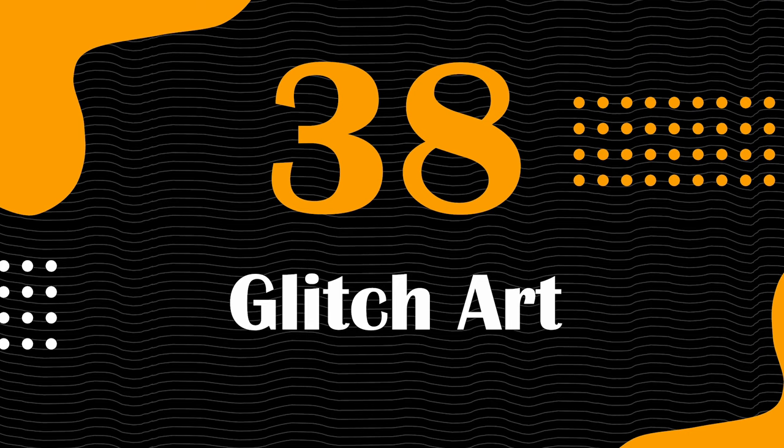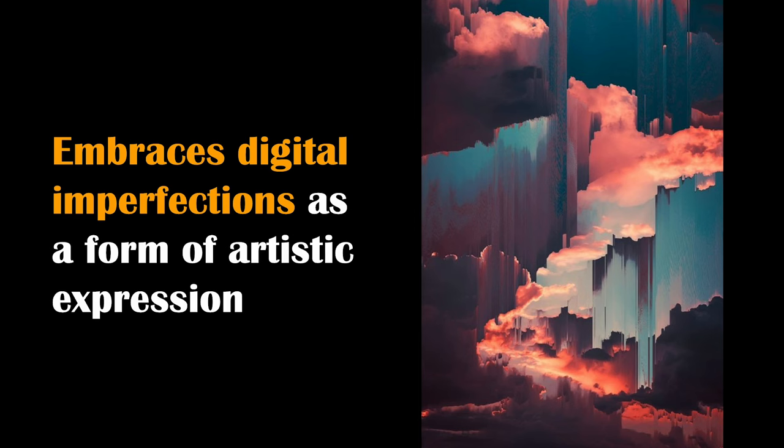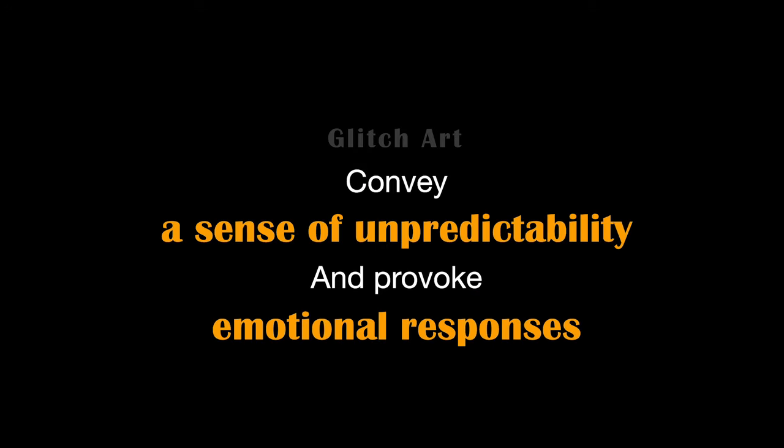Next is Glitch Art — a form that embraces digital imperfections as a form of artistic expression. It intentionally introduces errors, distortions, and disruptions into digital media to create unconventional and thought-provoking visuals. Examples include distorted images, scrambled text, and glitchy animations, which invite viewers to question the boundaries of digital art and design. It is needed to challenge conventional aesthetics and infuse design with a raw, experimental edge. Designers can use glitch art to convey a sense of unpredictability and provoke emotional responses.